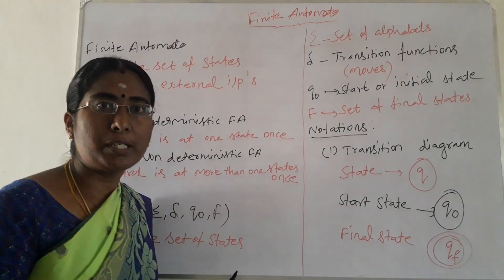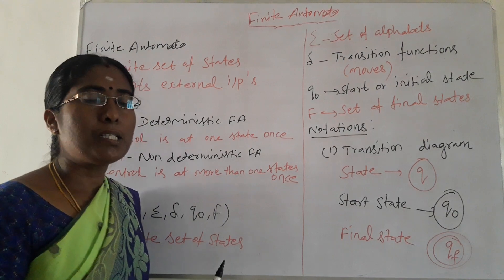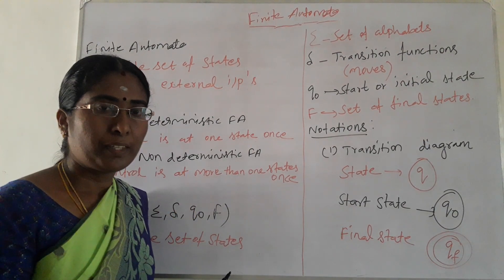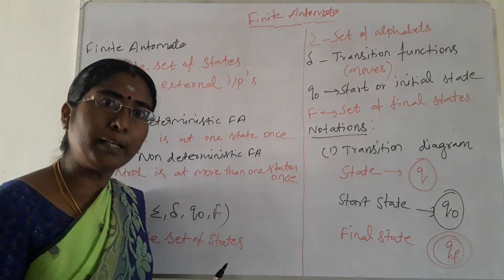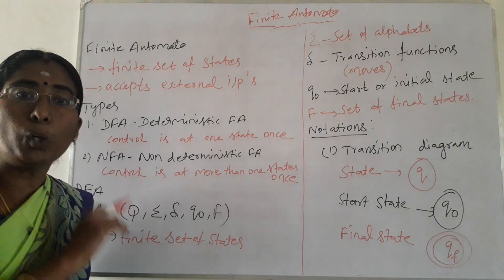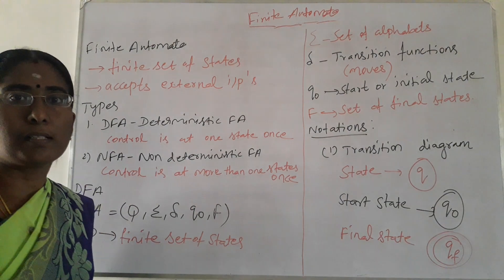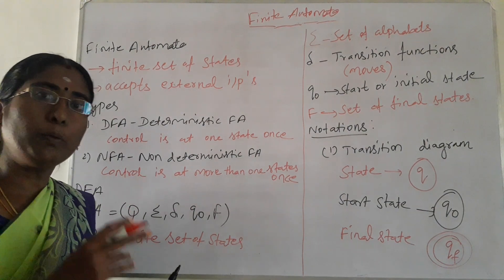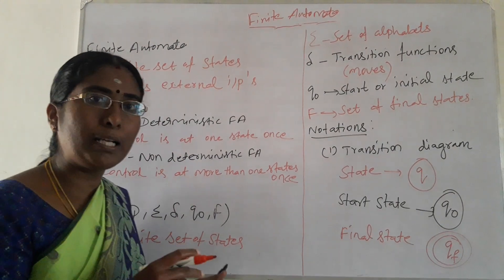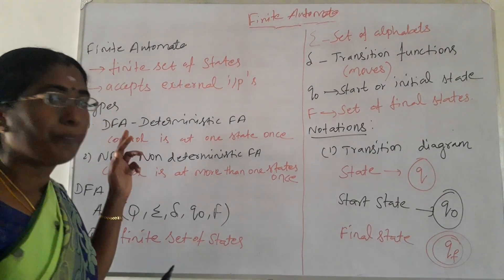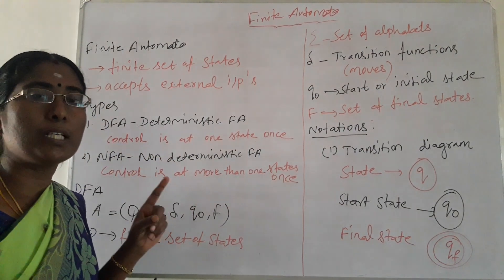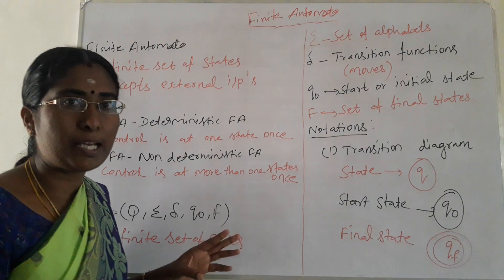What is determinism and non-determinism? Deterministic means the control is at only one state at once — the control is at exactly one state. But in non-deterministic finite automata, the control may be at more than one state at once. Formally, in DFA it can make only one transition for each and every input symbol from every state.